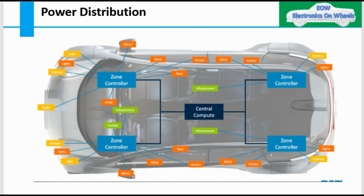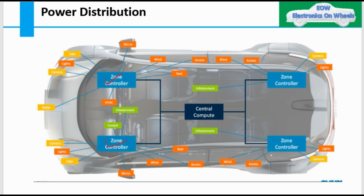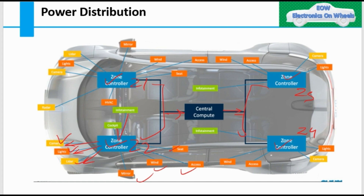Looking at the zonal controller in more detail: there are multiple zonal controllers - Z1, Z2, Z3, Z4 - all connected to a central computer through wire harness. From these zonal controllers, power supply is distributed to loads like cameras, lights, radar, mirrors, windows, seats, and accessories. This architecture results in significant wire harness weight reduction and wire length reduction.